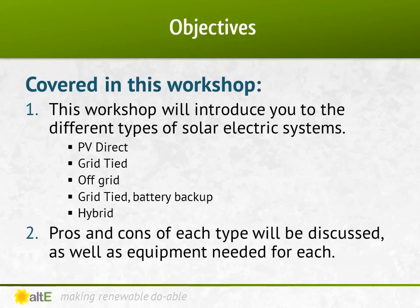We're going to go through the five different types of solar electric systems: PV direct, grid-tied, off-grid, grid-tied with battery backup, and finally a hybrid system. We'll discuss the pros and cons of each type and briefly cover the basic equipment needed for each type.